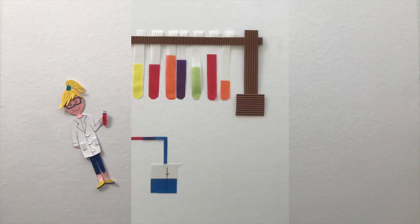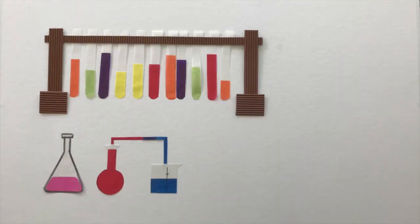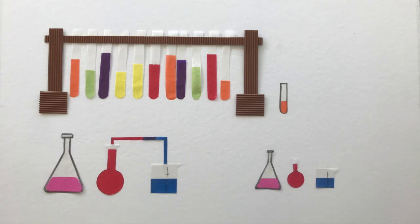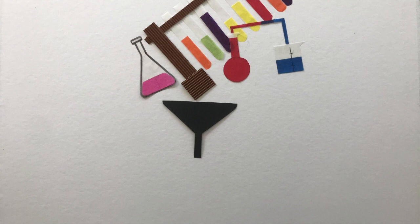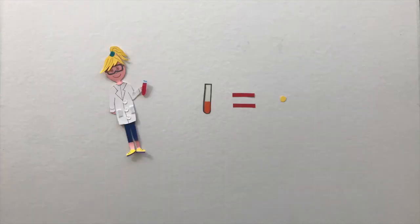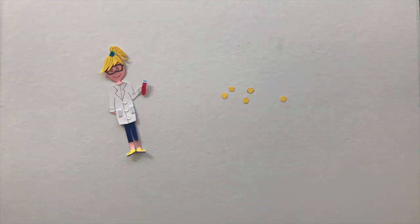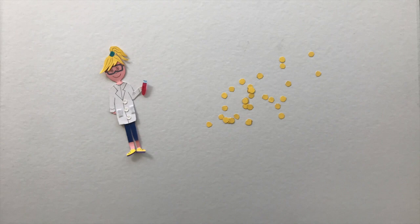The droplet-based microfluidic screening. This technology allows reducing the reaction volume to picoliters, which is equal to less than a grain of sand. Imagine the miniaturization of a lab into a chip, where each tube becomes a droplet of 2 picoliters. Then you can produce 10,000 droplets per second, allowing you to screen millions of droplets quicker and cheaper.